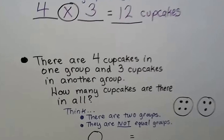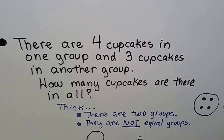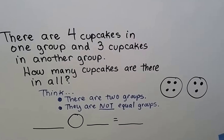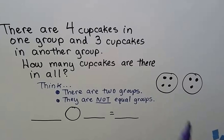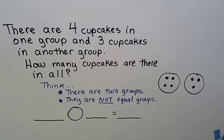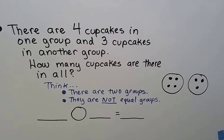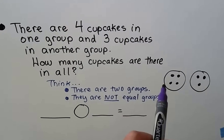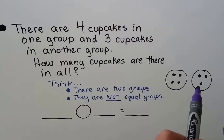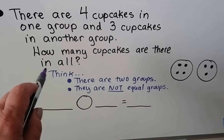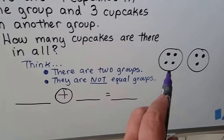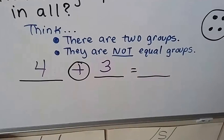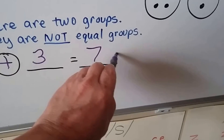Let's try this one. There are four cupcakes in one group and three cupcakes in another group. How many cupcakes are there in all? These are not equal groups — there's four in one and three in the other. It's asking how many in all, so we know we need to count. Would we do multiplication? They're not equal groups, so we can't do multiplication. Because it says 'in all,' we can add: four plus three equals seven cupcakes.